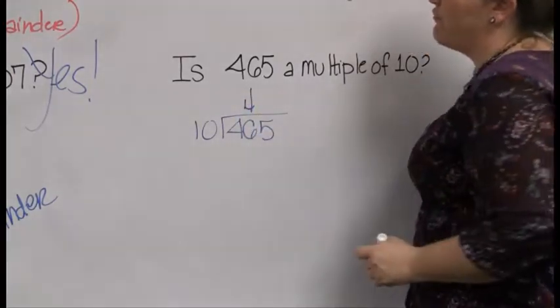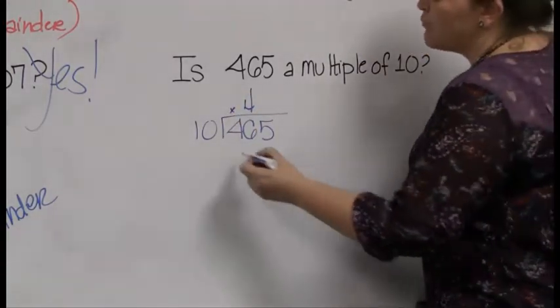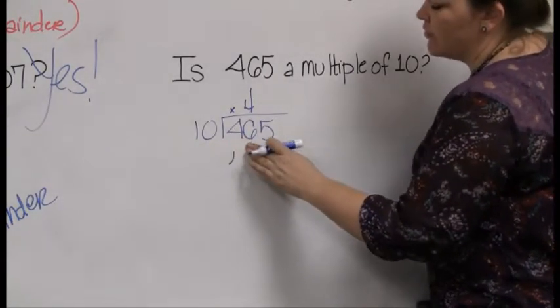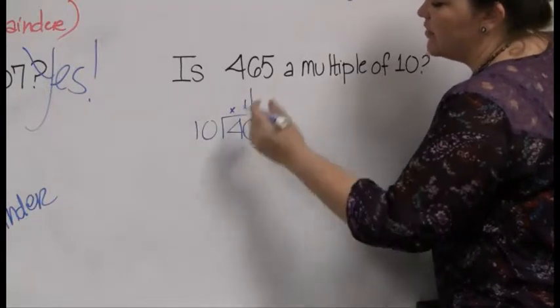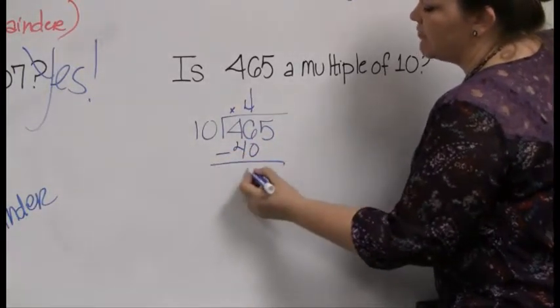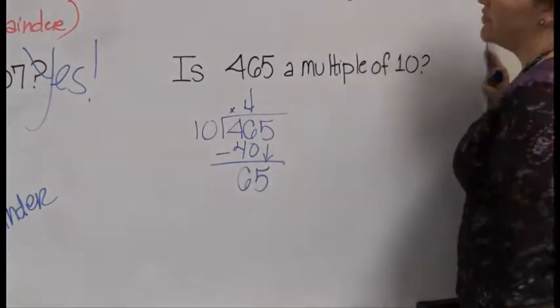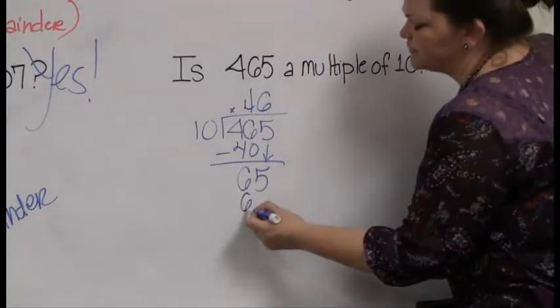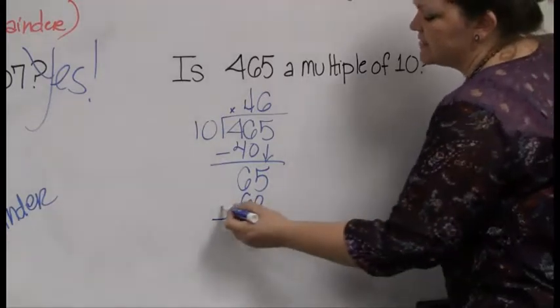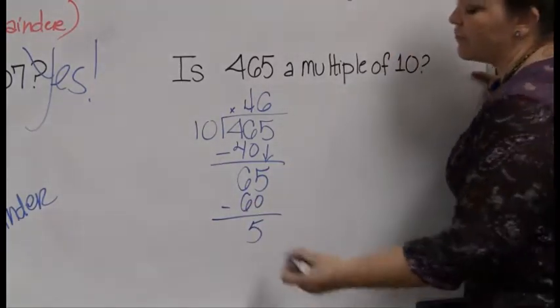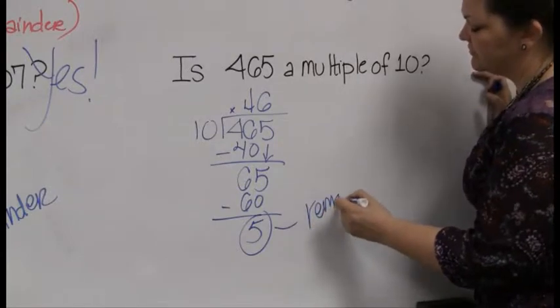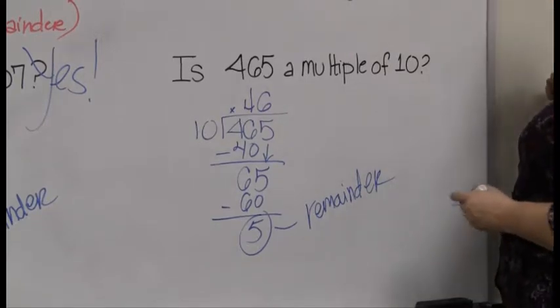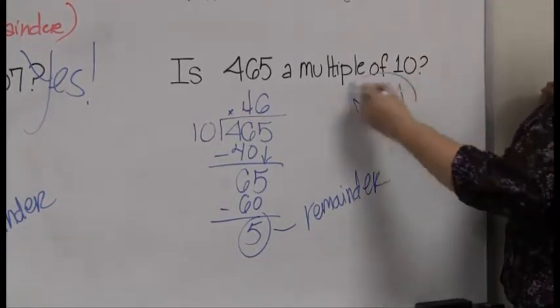10 goes into 46 four times. Again, I skipped right over that four because it didn't go in. And four tens, whoa, I got my line too fast, got a little excited. Four tens is 40. Subtract that out, my remainder is 6. Drop a digit, I've got the new number 65. And does 10 go into 65? It sure does. It goes in 6 times. 10 times 6 is 60. And look at that, I do have a remainder. Remainder, that's what's not allowed in divisibility. And so is 465 a multiple of 10? Heck no, it is not.